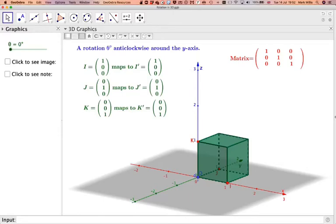So the y-axis here is the green one, this is the x, and this is the z. And here we have the unit cube.